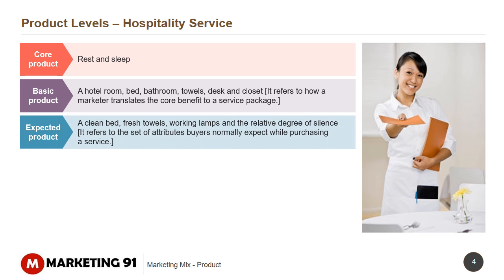The Expected Product includes a clean bed, fresh towels, working lamps, and a relative degree of silence. It refers to the set of attributes buyers normally expect while purchasing a service.